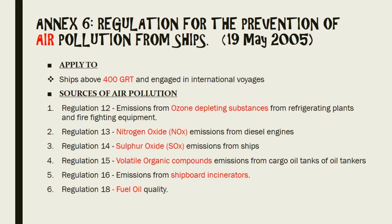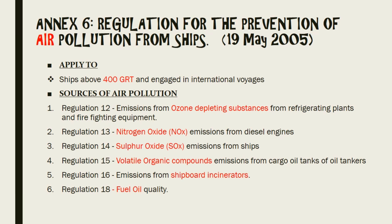Annexure 6 — regulation for the prevention of air pollution from ships. This is the most important and very vast annexure of MARPOL. It applies to all ships of 400 GRT and above engaged in international voyages. The most important point under this annexure is the sources of air pollution: ozone depleting substances, nitrogen oxides (NOx), sulfur oxides (SOx), volatile organic compounds, emissions from shipboard incinerators, and fuel oil quantities. These are covered under regulations 12, 13, and others respectively.